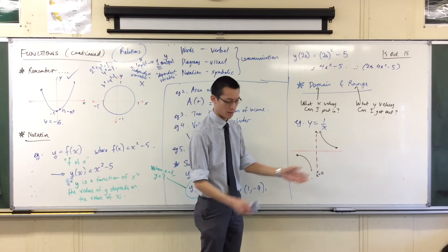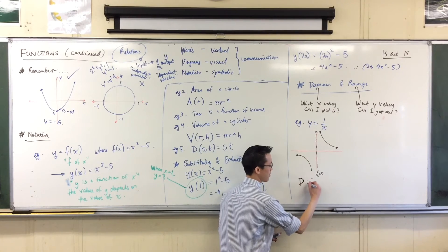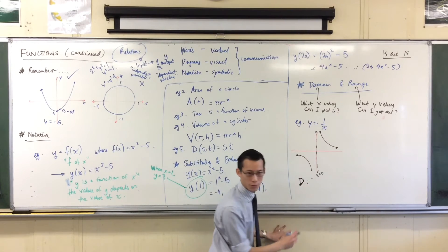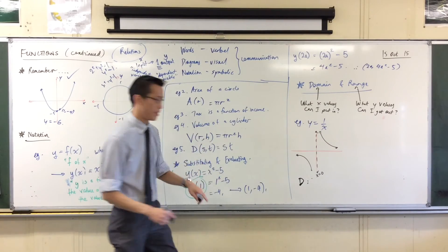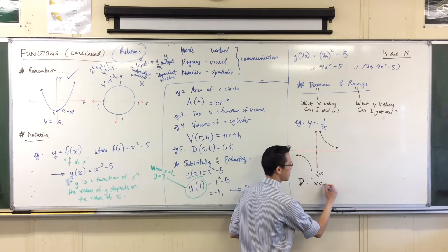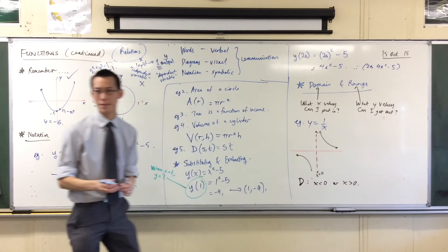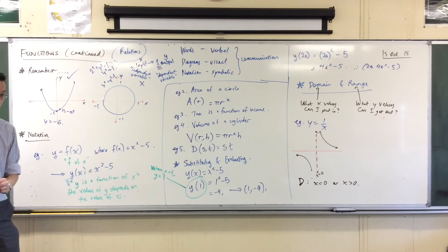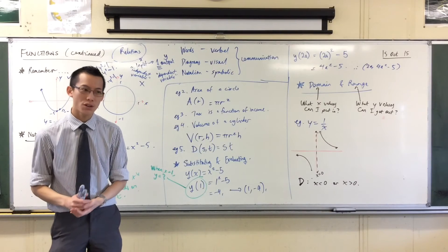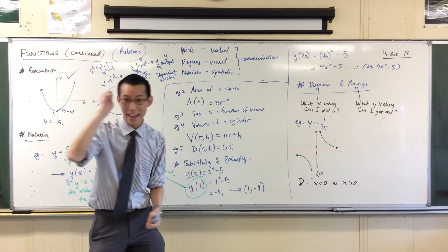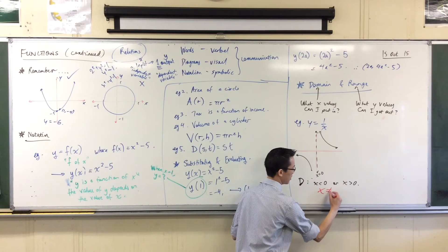So I would say for this graph, the domain - I'm just going to abbreviate it from now on - the domain is X is less than zero or X is greater than zero. That's the domain. That's the way I would write it as well. I'm going to borrow this language from inequalities that we've seen before.